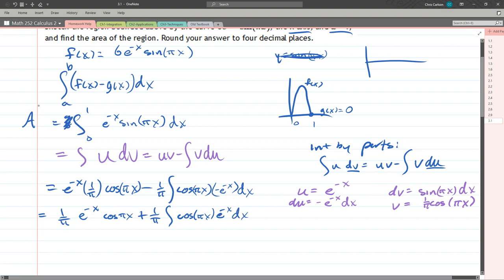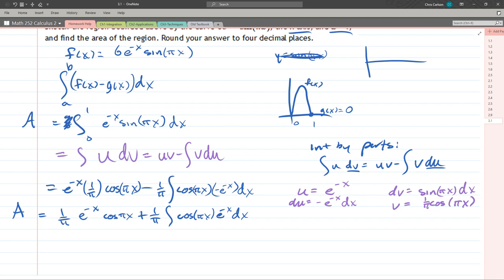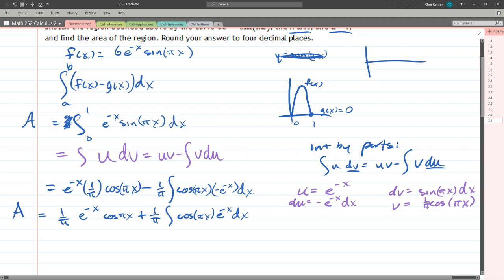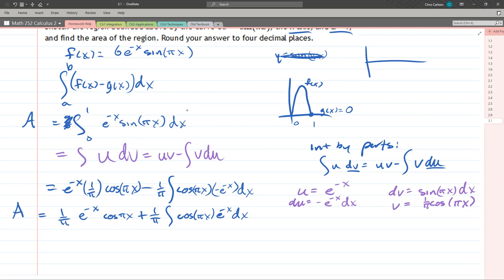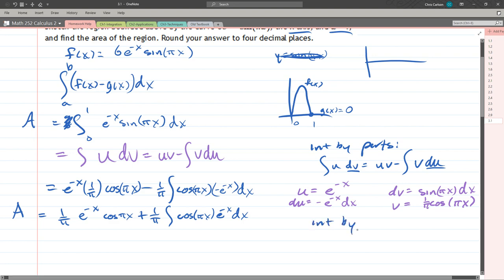Right now, you should be thinking, okay genius, it looks worse than when we started. What's going on? A lot of times, I'd recommend to just start over and try a different approach. Maybe switch your choices of what's u and dv. However, I have a feeling that if we keep going, we'll be okay. And by that, we're going to make a second integration by parts. And we're going to choose very similar things for u and dv.